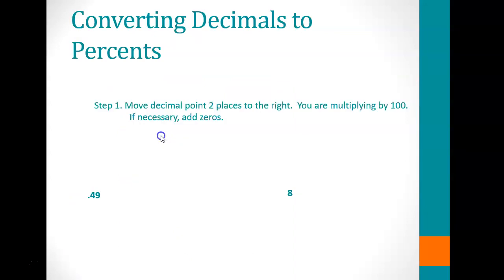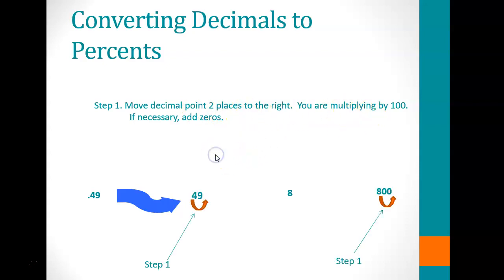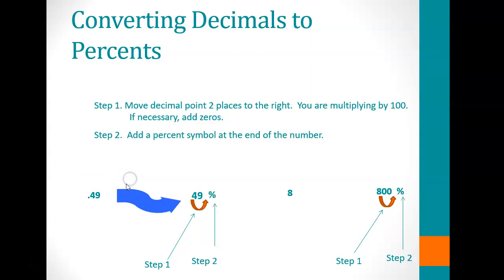When converting a decimal to a percentage, move the decimal point two places to the right. Basically, we're multiplying by 100, and if necessary, we add in two zeros. For example, 0.49 as a decimal becomes 49% by moving the decimal sign two spaces to the right and adding the percent sign.